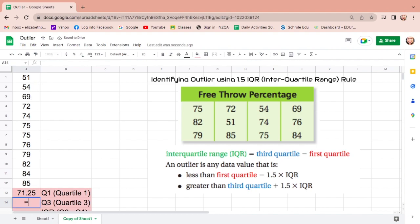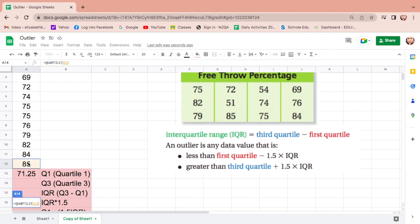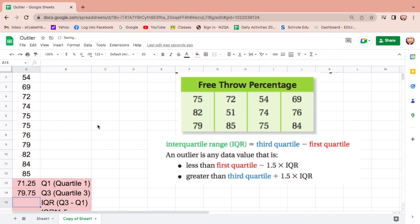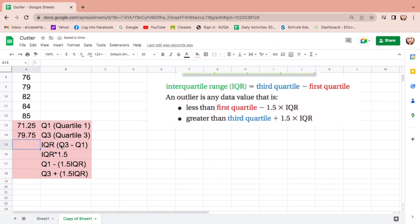Then find IQR, equals, Q3 is 79.75, click, minus Q1, 71.25, click, enter.